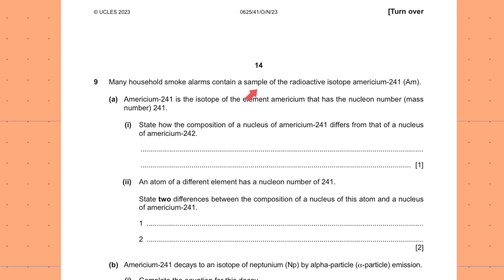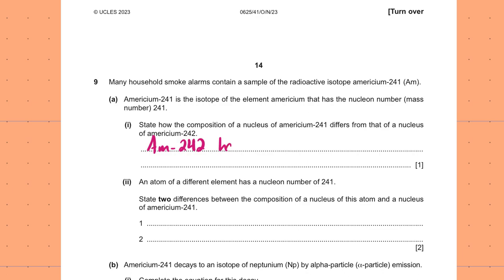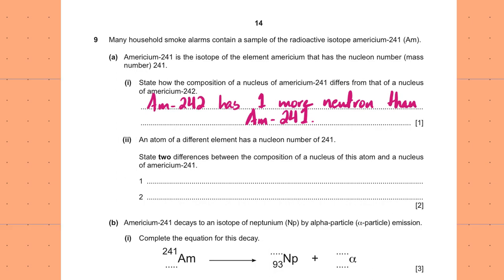Many household smoke alarms contain the radioactive isotope Americium-241. State how the composition of a nucleus of Americium-241 differs from that of Americium-242. Both are isotopes of Americium — proton numbers are the same. Americium-242 has one more neutron than Americium-241.